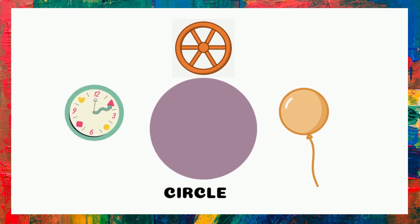What is the name of this shape? Circle. It's a circle. Examples of circle are clock, wheel, balloon.